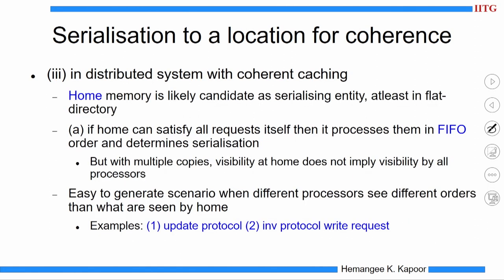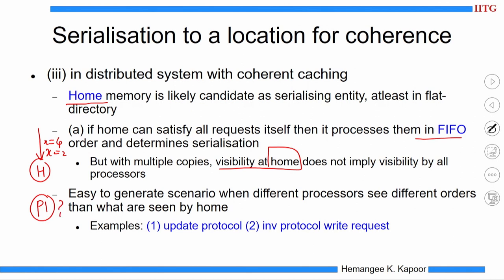But if we cache shared data — that is, we have coherent caching — can the home node still be such a serializing entity? If yes, do we need to make some changes to make that happen? If we say home is our serializing entity, it should satisfy requests in first-come-first-served (FIFO) order. But when there are multiple copies of a block, even if the home sees that a change has happened, it does not imply that all nodes in the system have seen that change. If H sees X become 2 and then X become 4, generating a serialized order at H — can you guarantee that a remote node P1 somewhere else in the system has seen the same order?